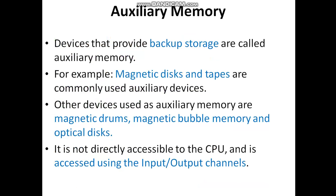Regarding auxiliary memory devices, these are used for backup purposes. If there is a large amount of data in the main memory and the main memory is losing free space, those data can be transferred to auxiliary memory. Examples include magnetic disks, magnetic tapes, magnetic drums, magnetic bubble memory, and optical disks — all of these fall under the category of auxiliary memory. These memories are not directly connected to the CPU, only through the I/O processor and the main memory.